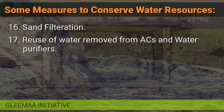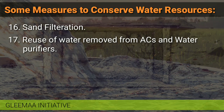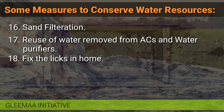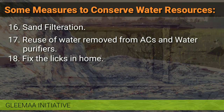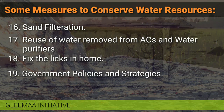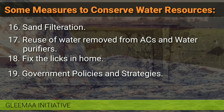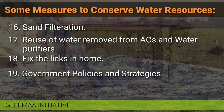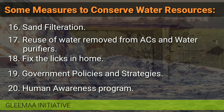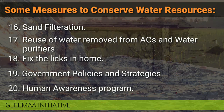Number 17: Reuse of water removed from air conditioners and water purifiers. Number 18: Fix leaks in homes, which will reduce runoff of water from unknown sources. Number 19: Government policies and strategies will help to conserve water resources in our country. Number 20: Last but not least, human awareness programs — educating people wherever and whenever necessary for the wise use of water.